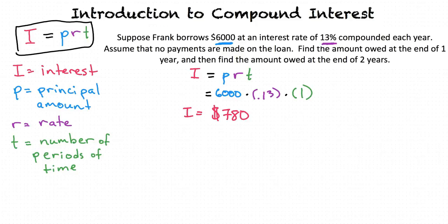So $780 is the interest developed after the first year. The total amount owed after the first year is $780 plus the principal amount of $6,000. So $6,000 plus $780 equals $6,780.